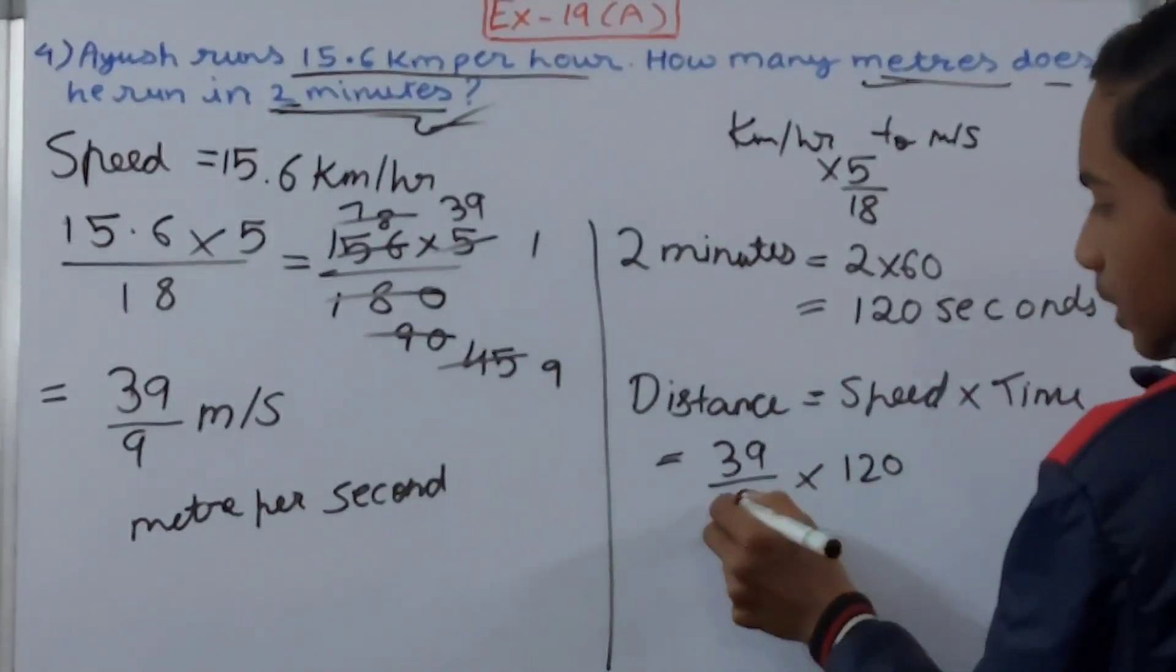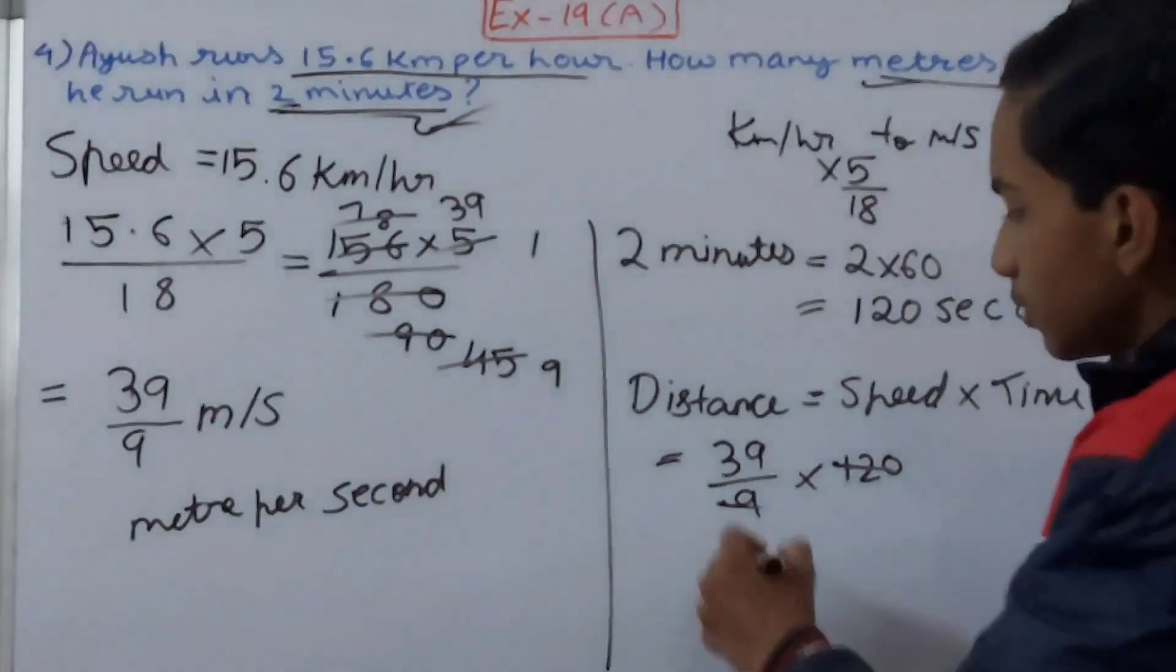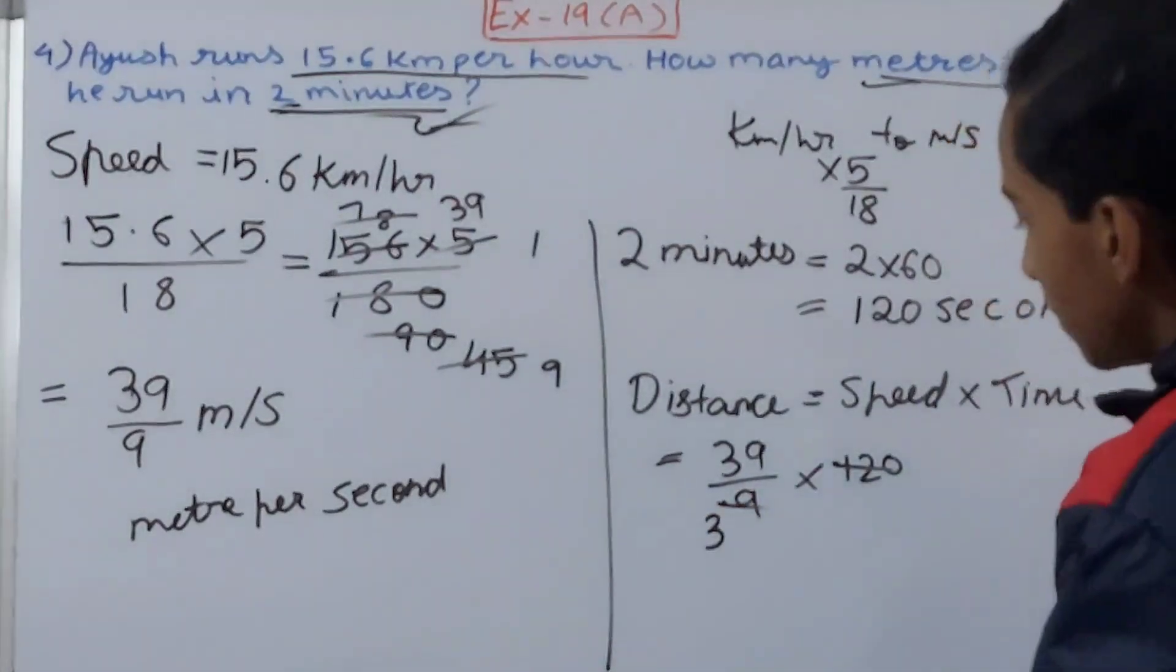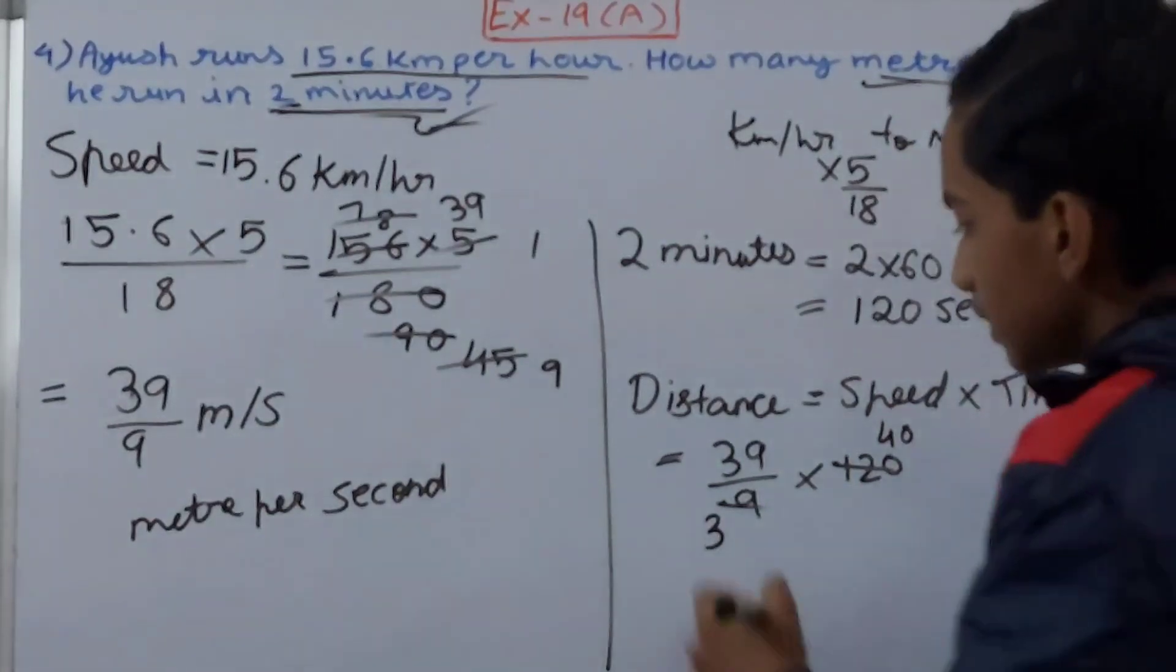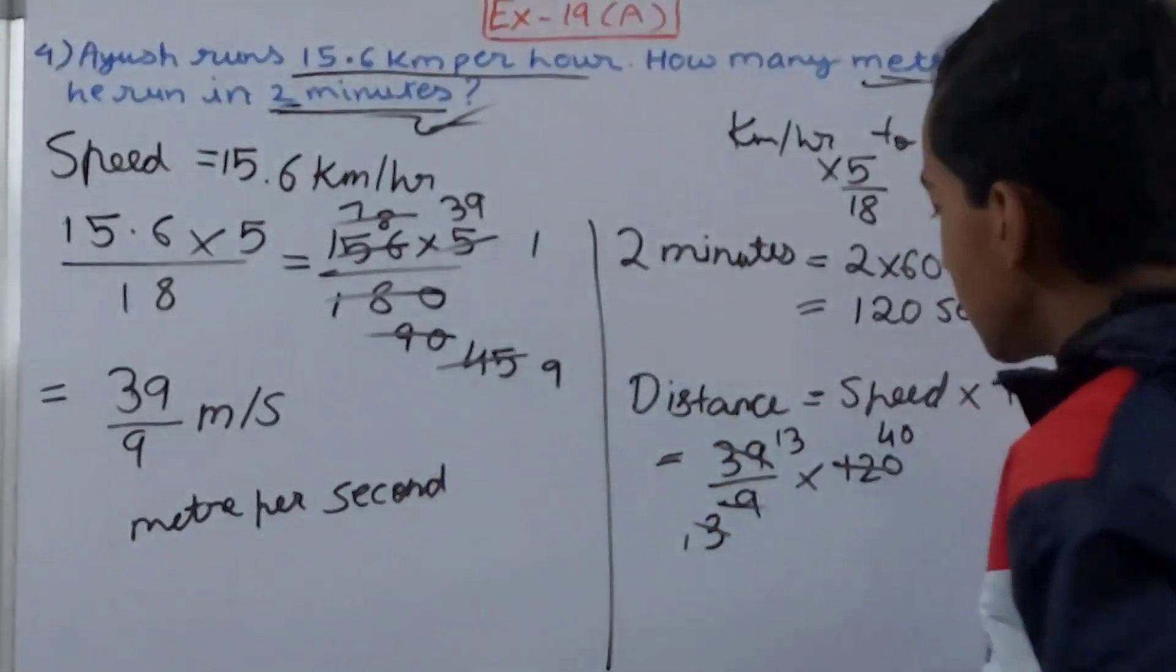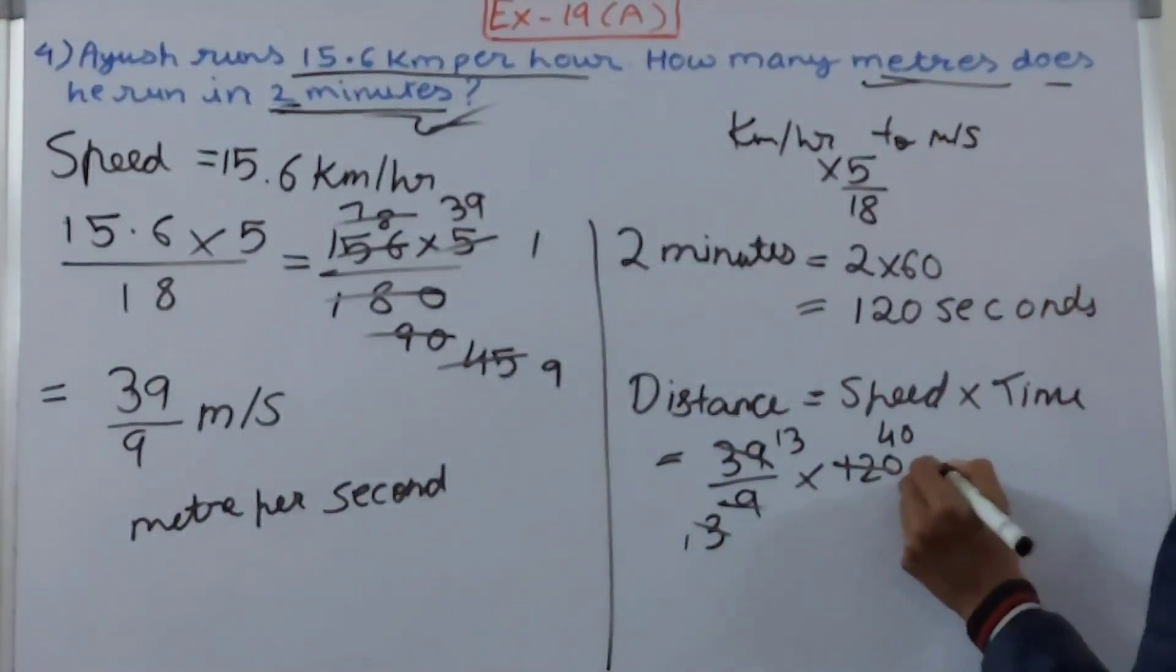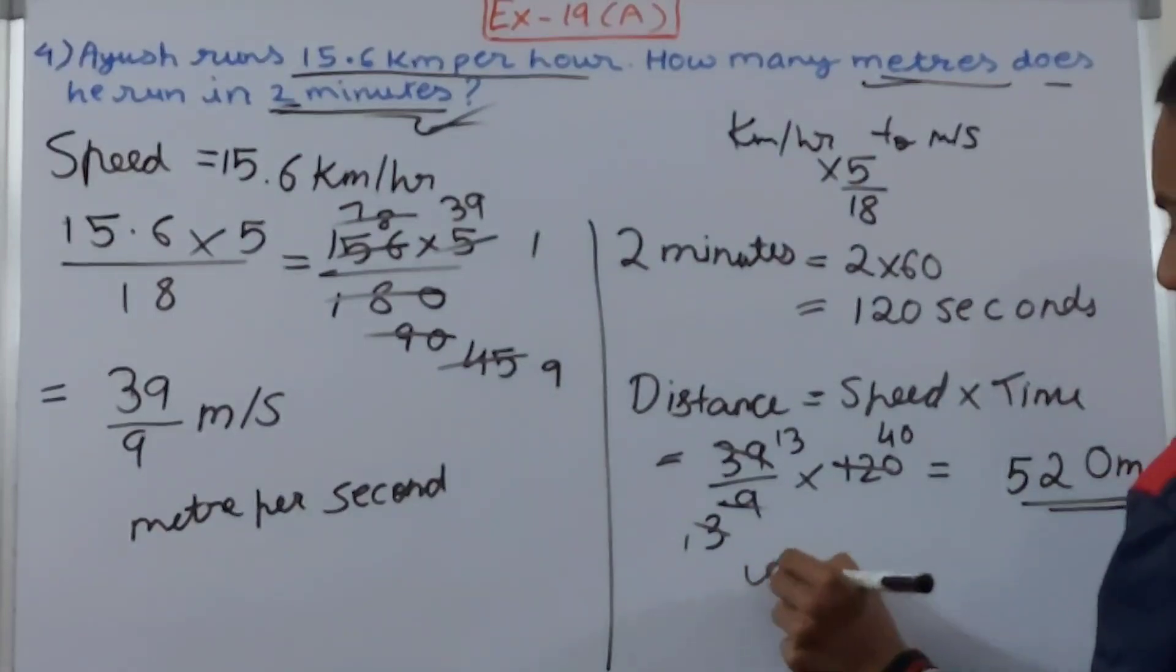39 won't cancel because it is a prime number. Let's cancel this only, so by 3 I'll cancel: 9 goes 3 times, 12 goes again 4 times. So again this will cancel. Now 1 and 3, 13. So 13 into 40, so 1 0 here, and this becomes 52. So 520 meters. This becomes our answer. So you can say that the answer is: it will travel 520 meters in 2 minutes.